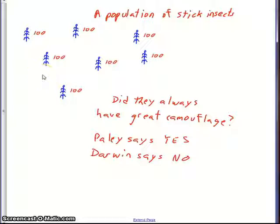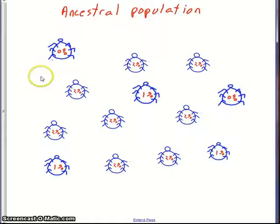So in Darwin's view, the ancestors might have looked like this—very unstick-like. The numbers inside them would indicate the percentage like a stick that each of these individuals is. So here's a zero percenter, very chubby. Here's a two percenter, a little bit thinner than the zero percenter.